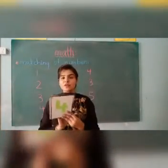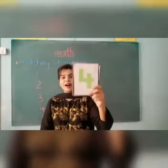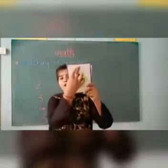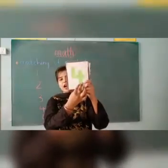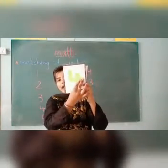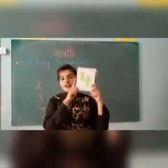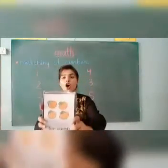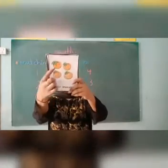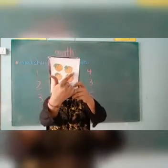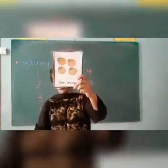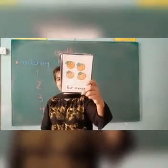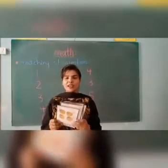Now let's move towards the next number, which is number 4. Number 4 — 4 is like sitting on a chair. Now count the objects. What are these? Oranges! Let's count: 1, 2, 3 and 4. 4 oranges! Well done.